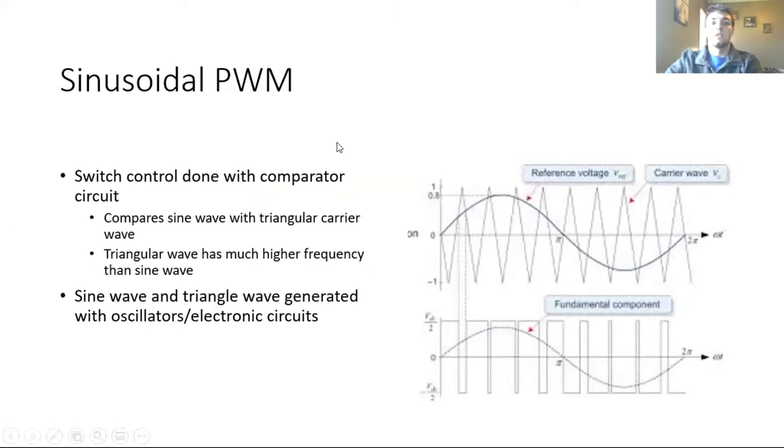To do that we're going to compare a sine wave with a triangle wave in a comparator circuit. As you can see in the picture to the right here we have a sine wave and we're going to compare that to a much higher frequency triangle wave. When the sine wave is greater than the triangle wave the pulse will be high. The pulse is only greater for this little bit so this pulse is going to be much more negative for the negative half cycle.